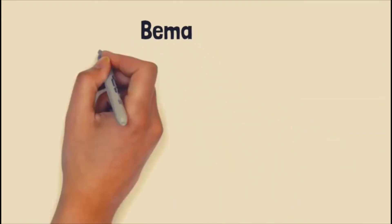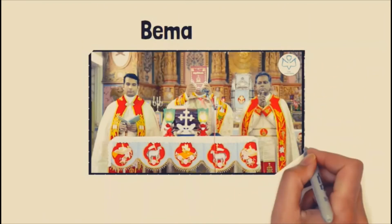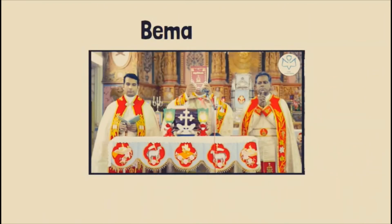The Bema is located either in the middle of the Haikala or adjacent to the Kestroma. This is where the liturgy of the word is celebrated. At the center of the Bema is kept a holy cross, with candles on each side representing the Old and the New Testament. The Bema is a symbol of earthly paradise. Christ came down from heaven taking the form of a servant and preached, giving us the way. For this reason, gospels are read at the Bema, symbolizing Christ's public ministry and the church's teaching authority on behalf of Christ.